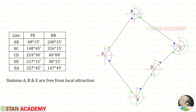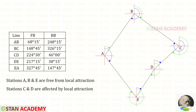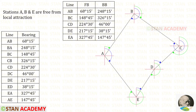In this case, we can assume that stations A, B, and E are free from local attraction, and the rest of the stations, C and D, are affected by local attraction. Now let us make a table. In the table, let us enter the bearings separately.